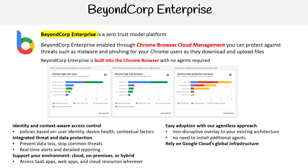Talking about Chrome, right? It relies on Google Cloud's global infrastructure for scale, reliability, and security of Google's network — with 144 edge locations in over 200 countries and territories.